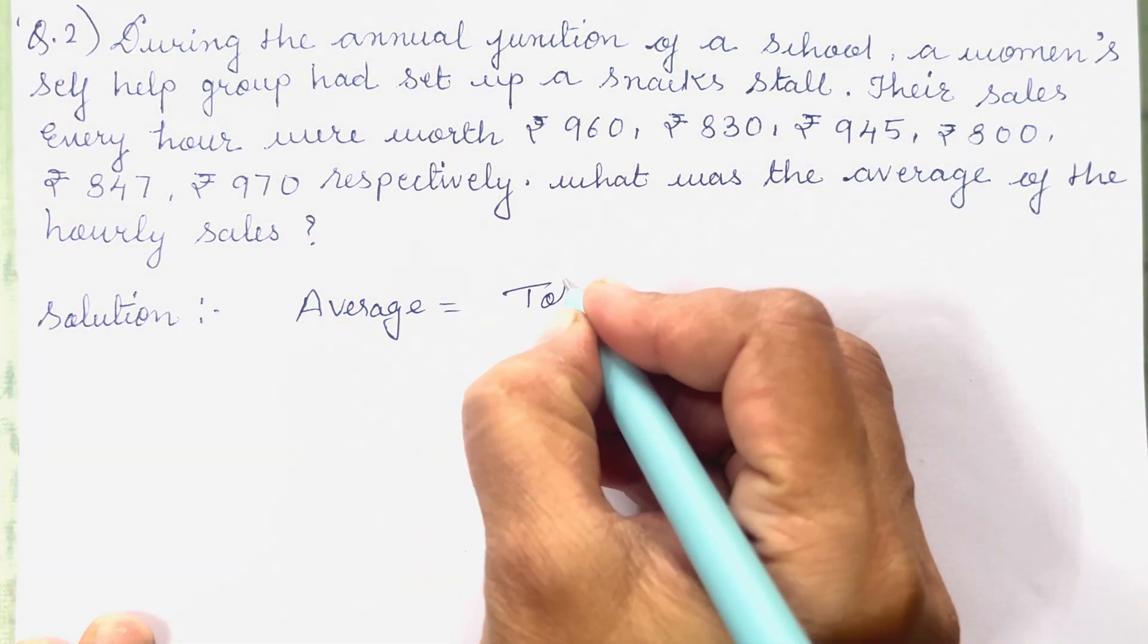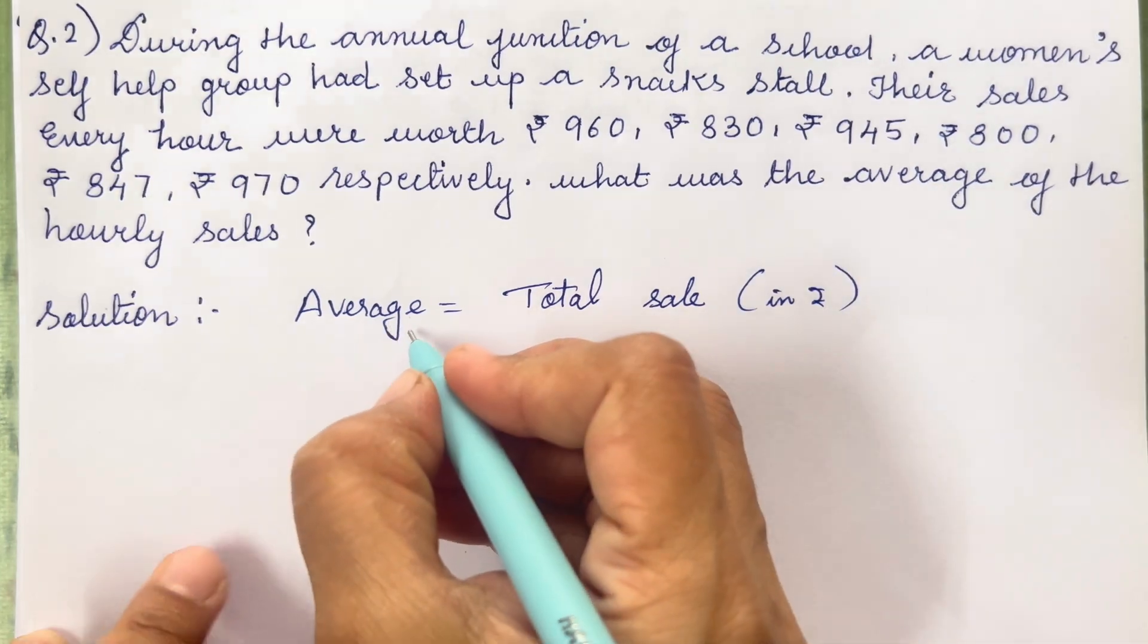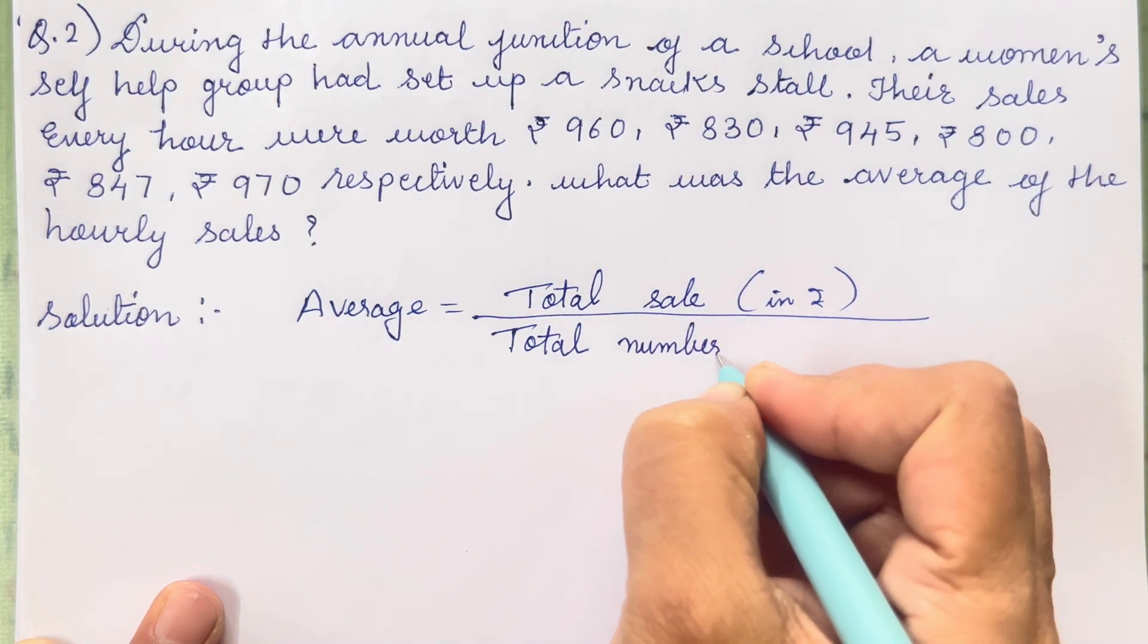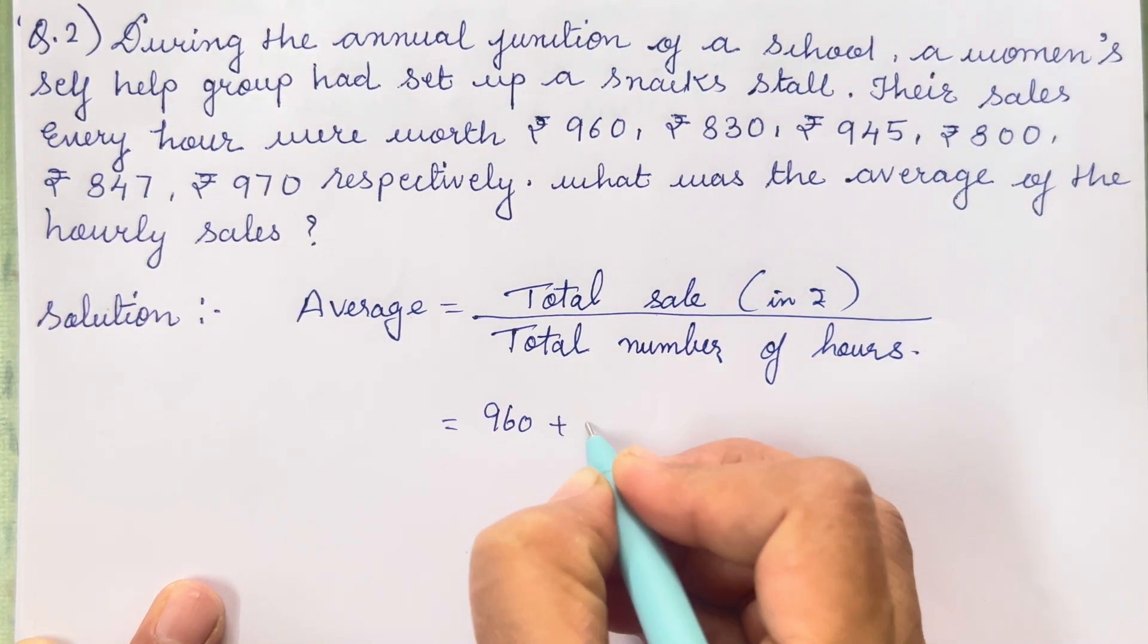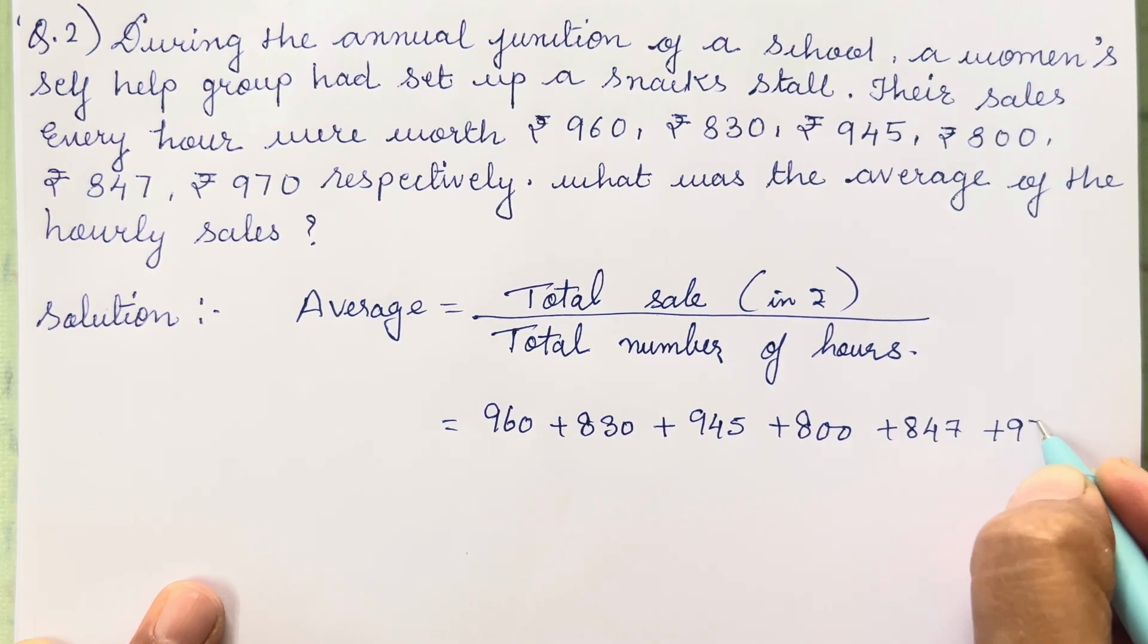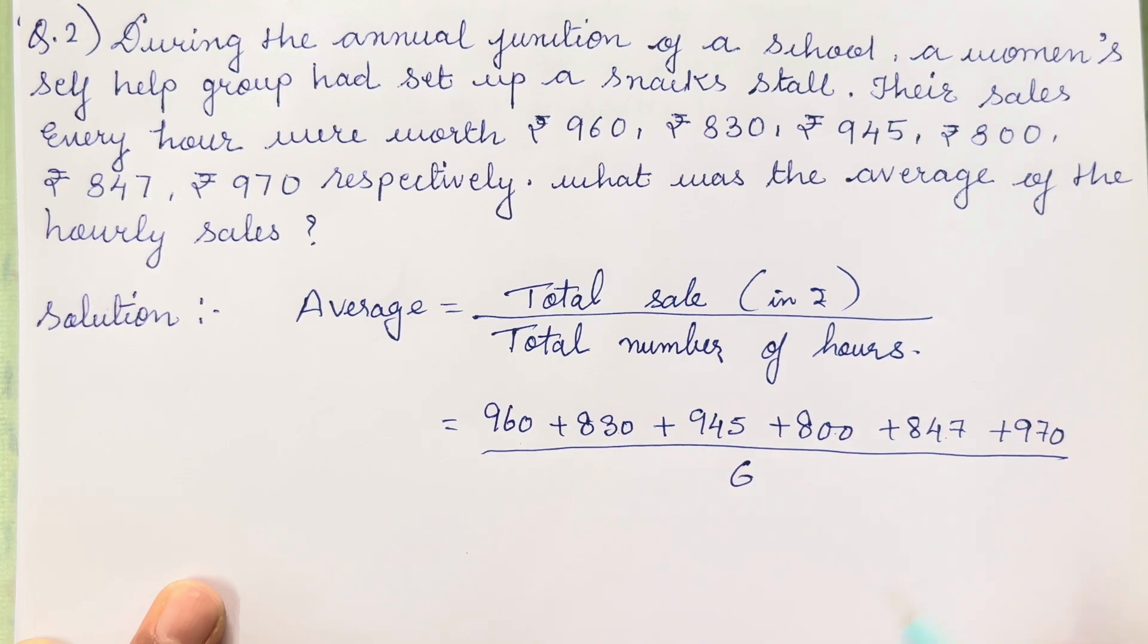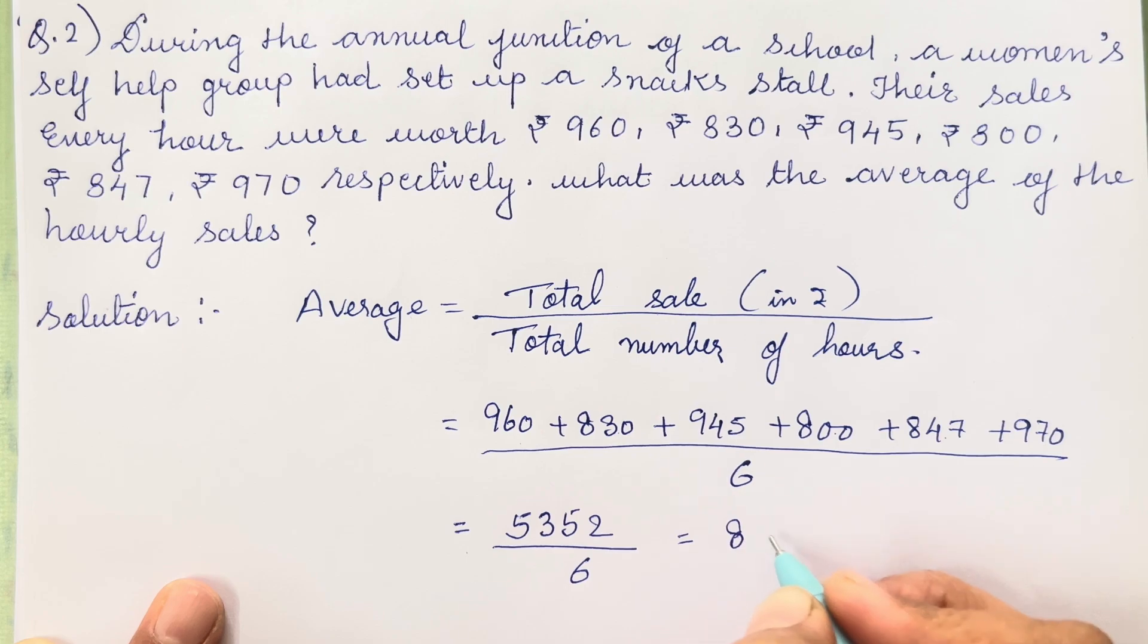Average is equal to total sale in rupees on total number of hours which is 960 plus 830 plus 945 plus 800 plus 847 plus 970. 1, 2, 3, 4, 5, 6 divided with 6. When you add it you are going to get 5352 divided with 6. When you divide it you are going to get the answer 892.